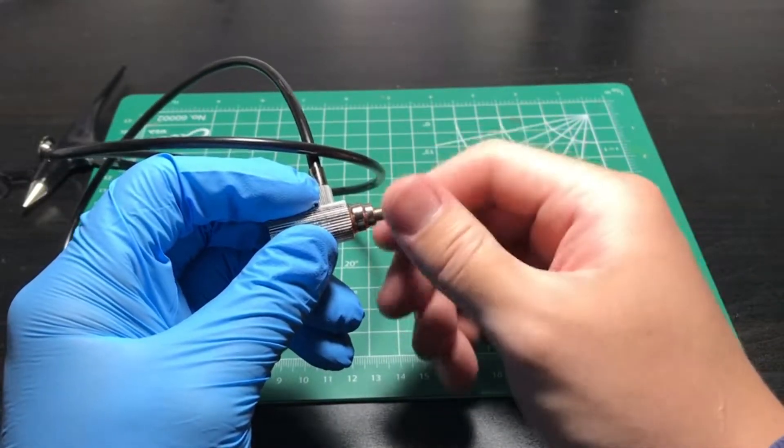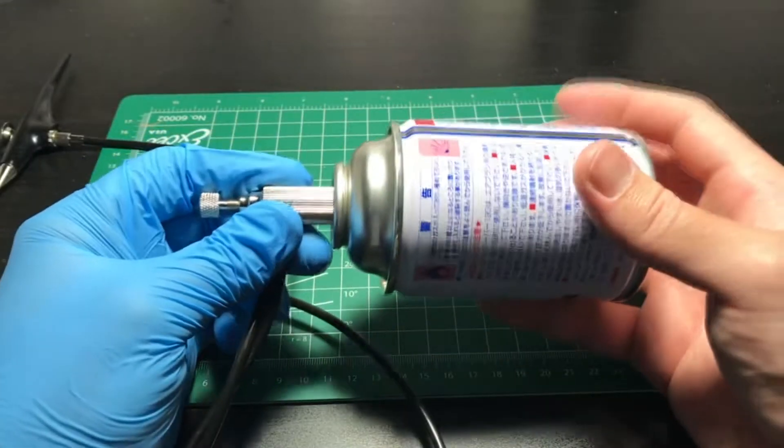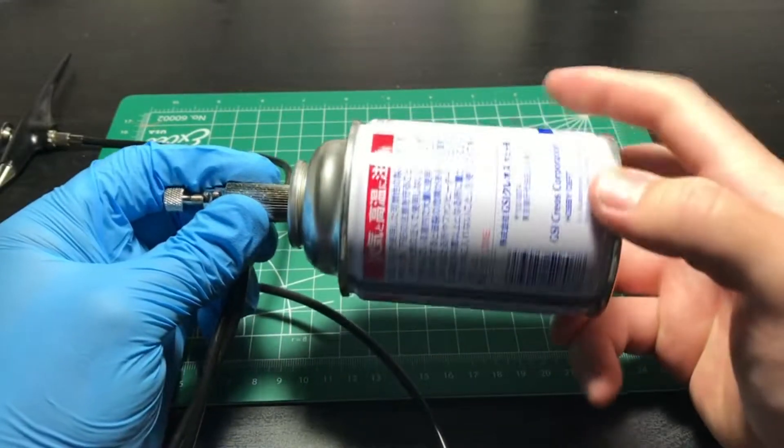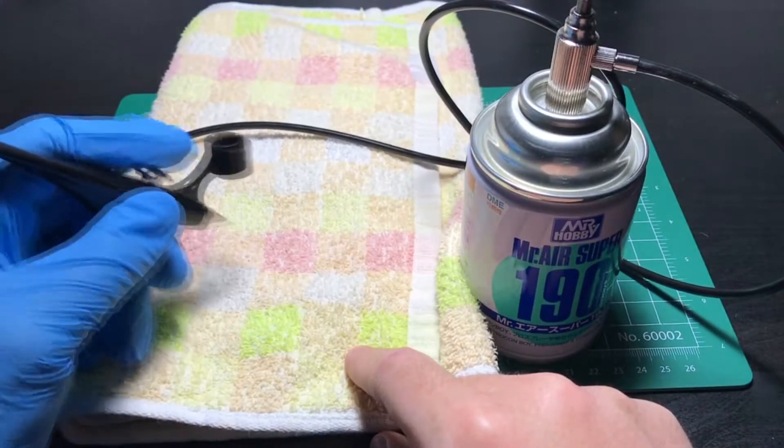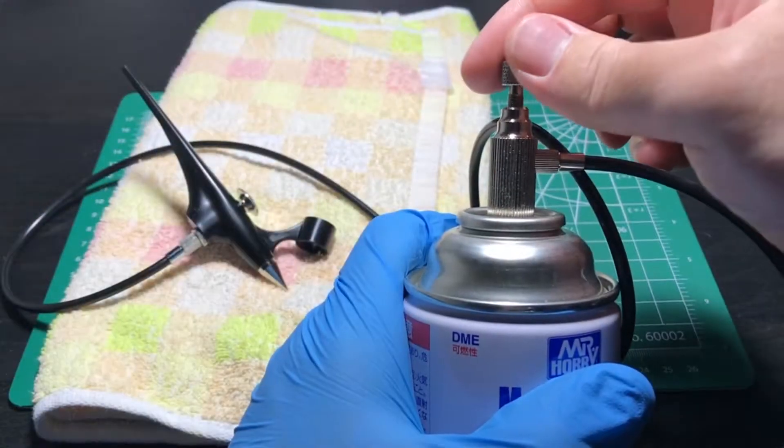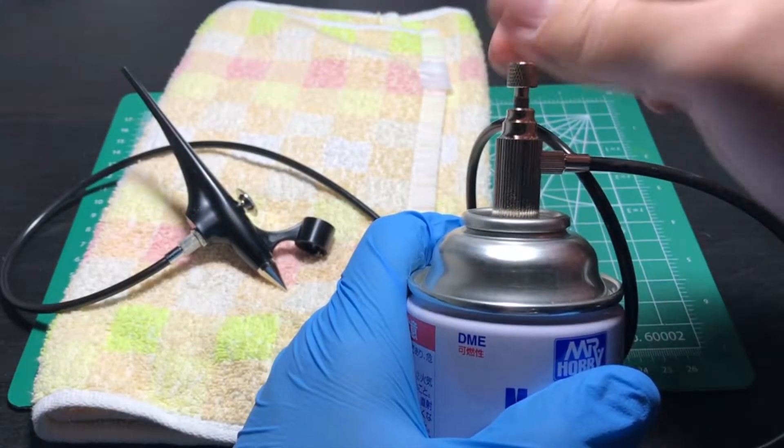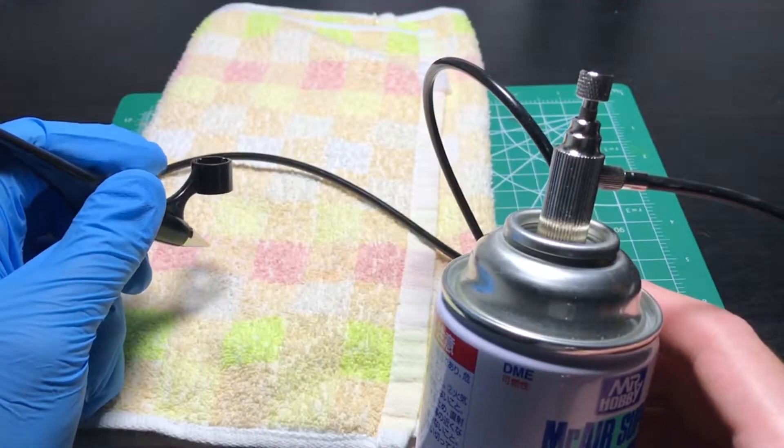For the other end, first unscrew the air valve to the point you can take it off. Then, you attach the other end to the aerosol can. At this stage, even if I press the trigger, the air won't blow out from the gun. To get some air, I screw in the air valve and twist it until I feel some resistance while twisting, and test to see if air will come out.